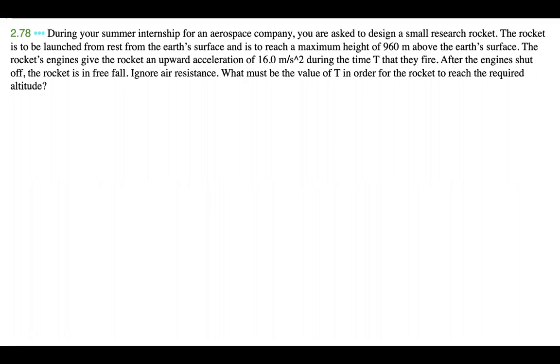During your summer internship for an aerospace company, you're asked to design a small research rocket. The rocket is to be launched from rest from the Earth's surface and is to reach a maximum height of 960 meters above the Earth's surface. The rocket's engines give the rocket an upward acceleration of 16 meters per second squared during the time t that they fire. After the engines shut off, the rocket is in free fall. Ignore air resistance. What must be the value of t in order for the rocket to reach the required altitude?